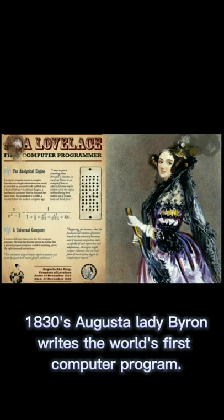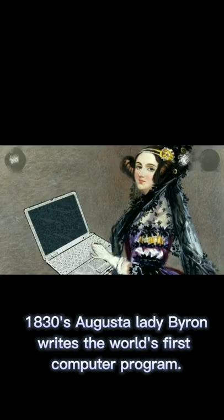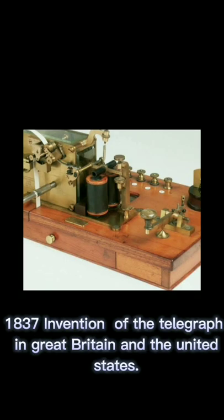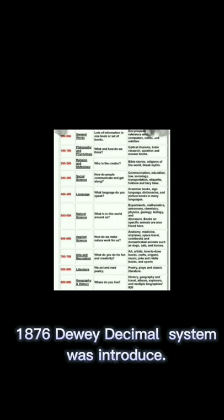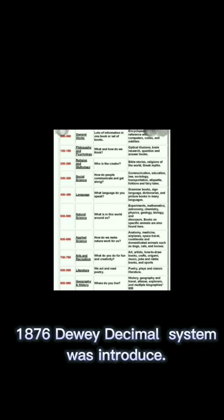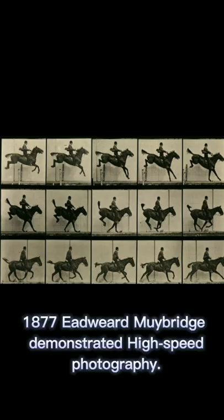In the year 1830, Ada Lovelace wrote the world's first computer program. In 1837, the telegraph was invented in Great Britain and the United States. In 1861, motion pictures were projected onto a screen. In 1876, the Dewey Decimal system was introduced. In 1877, Eadweard Muybridge demonstrated high-speed photography. In 1899, the first magnetic recording was released.